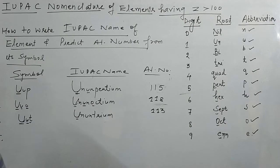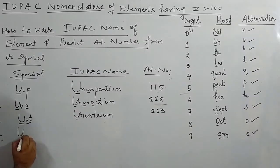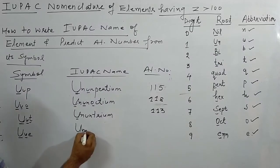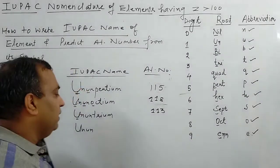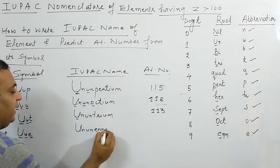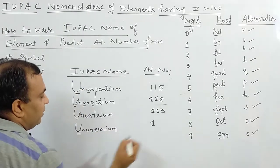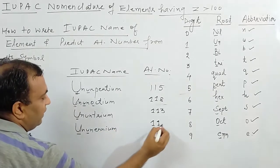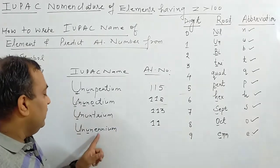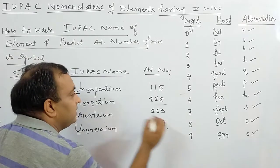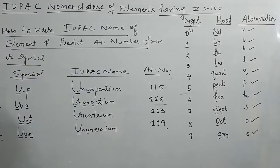Fourth reverse example: symbol UUE. U stands for un, again U stands for un, E stands for enn. IUPAC name is Ununennium. Atomic number: un → 1, un → 1, enn → 9. So atomic number is 119.